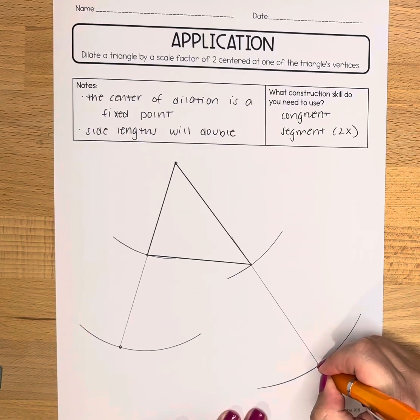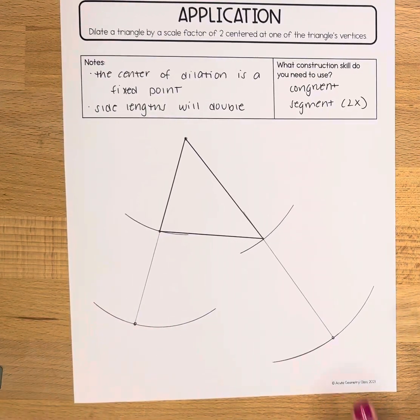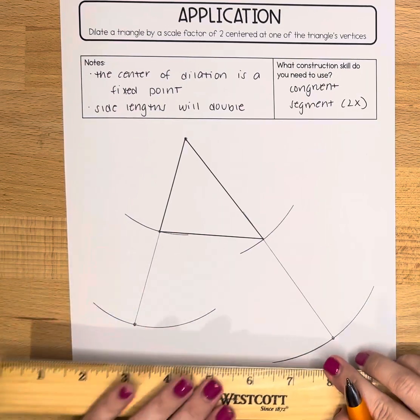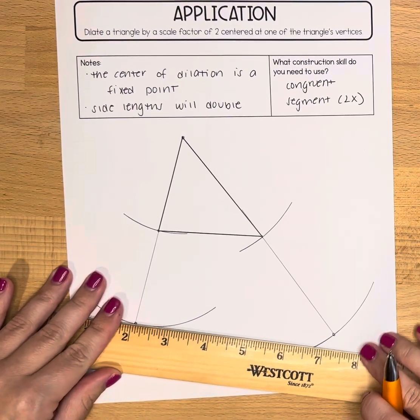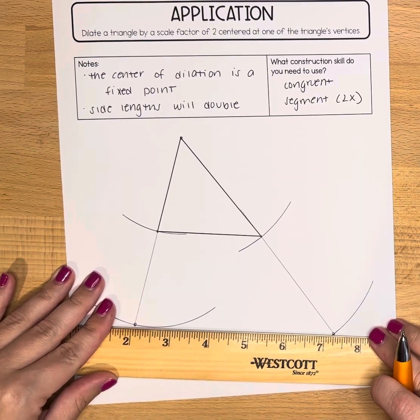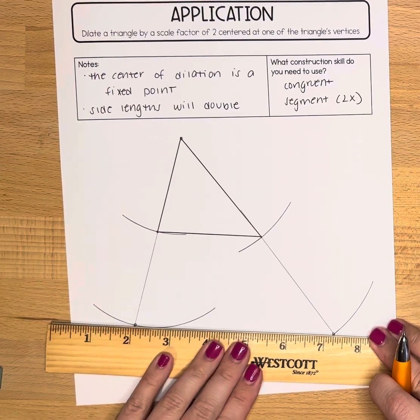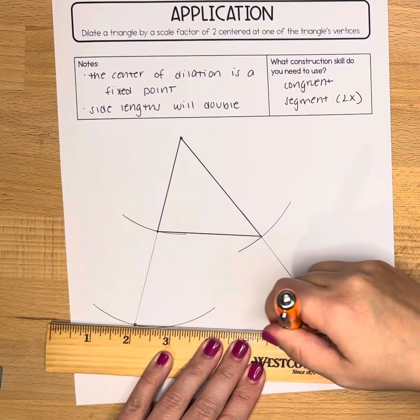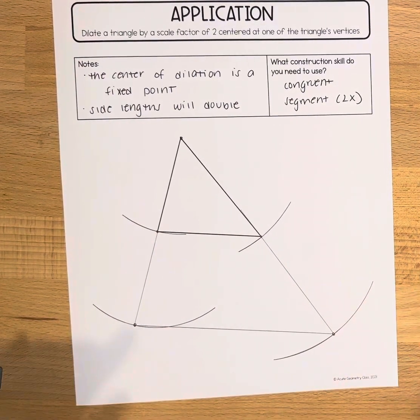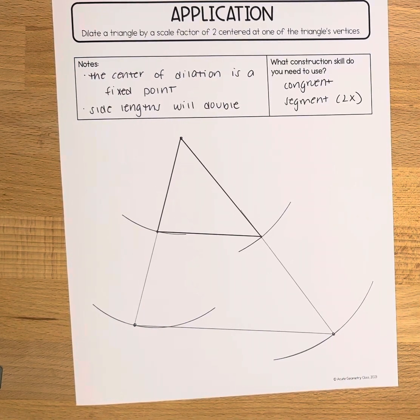So you'll have these two points down here. What we are going to do is we are going to use a straight edge to connect them. And now we have dilated the triangle by a scale factor of two centered at one of the vertices.